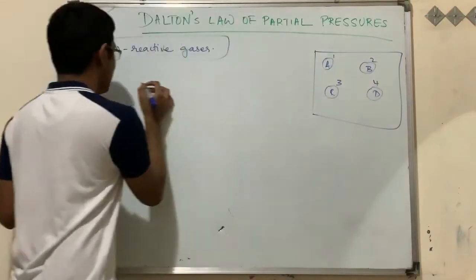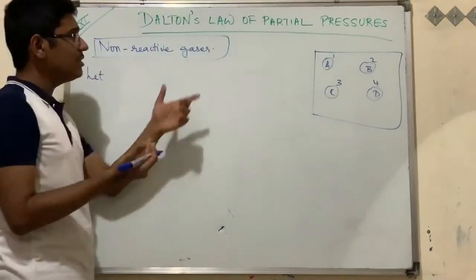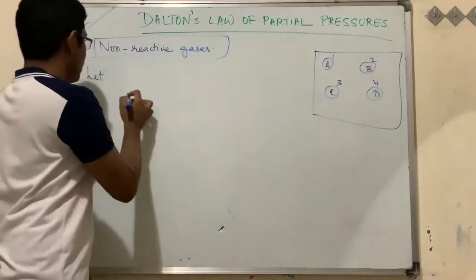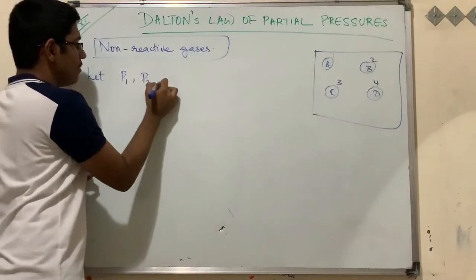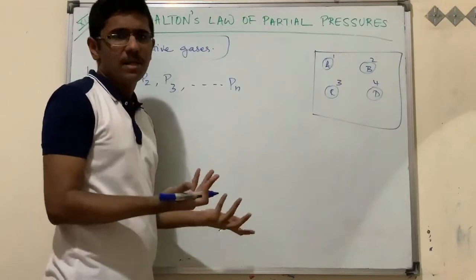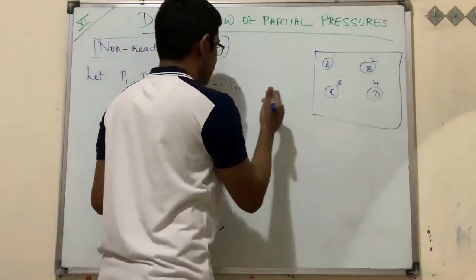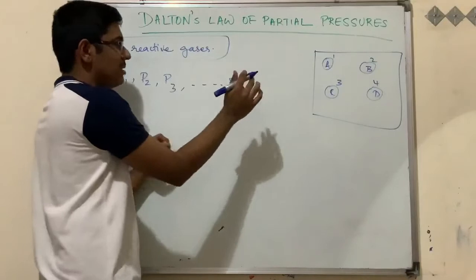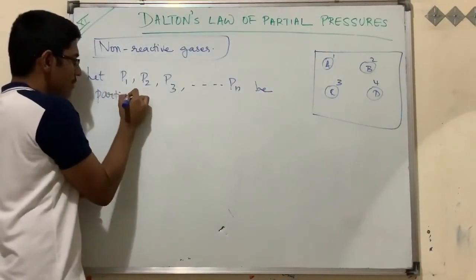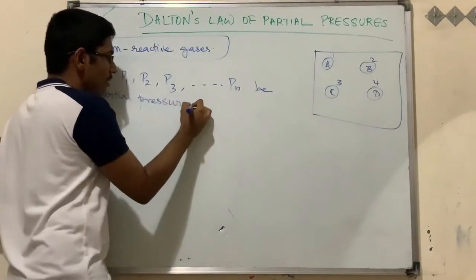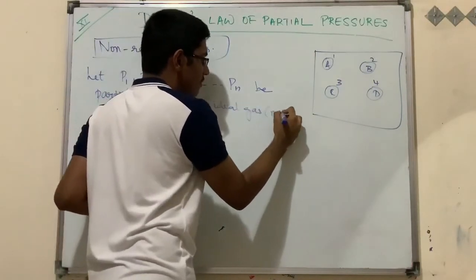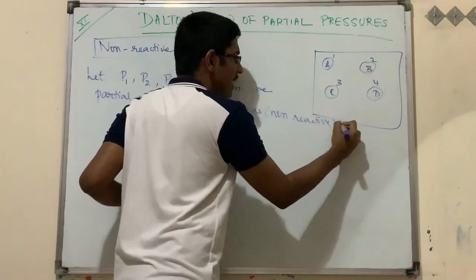Every molecule of each gas exerts a particular pressure. The individual pressures of the different gas molecules are known as partial pressures. Let p1, p2, p3, ... pn be the partial pressures of ideal, non-reactive gases in the sealed container — where pn accounts for the fact that we cannot predict exactly how many gases are present.